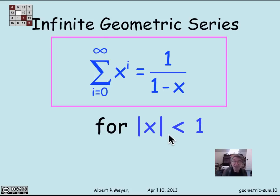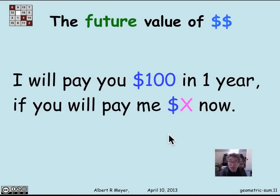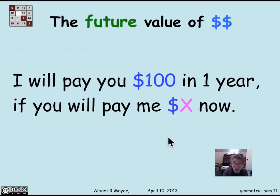That's the mathematical preliminaries of geometric sums and geometric series. Now let's look at a typical application having to do with the future value of money. Suppose we want to make the following deal: I promise I will pay you $100 in one year if you will pay me a fixed amount now — call it x dollars. The puzzle is: how much money is $100 worth if you can't have it now and can only have it in one year? What would be a fair amount for you to pay me so that nobody loses?